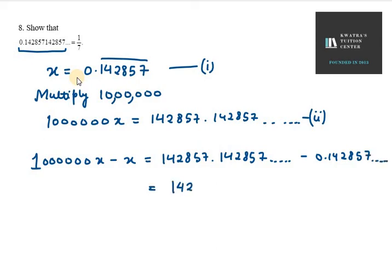When you subtract, you will get 142857 on the right side, and on the left side you will get 999999x.